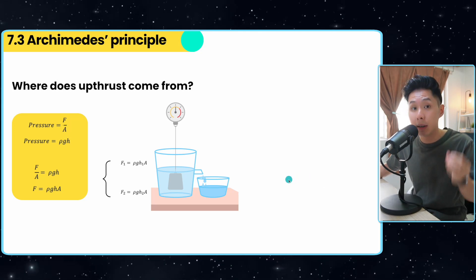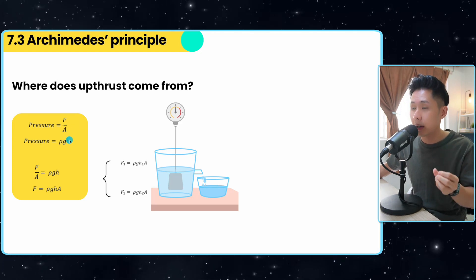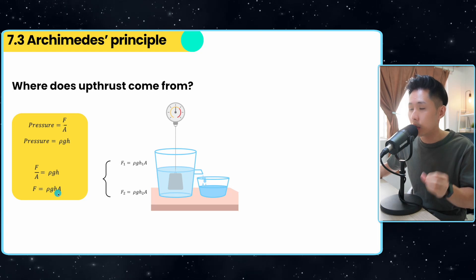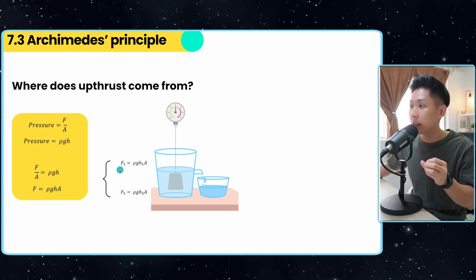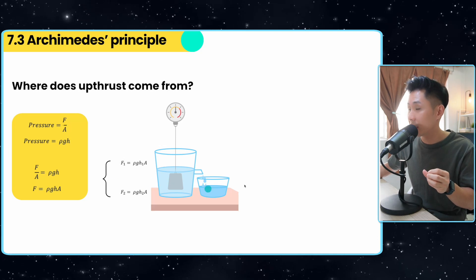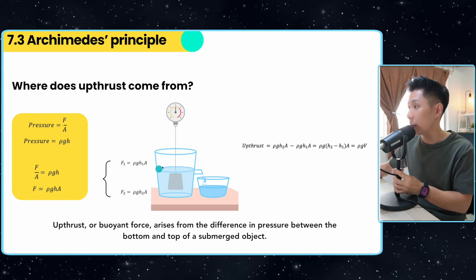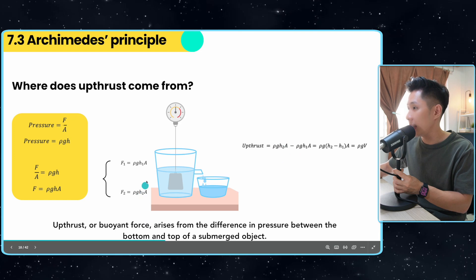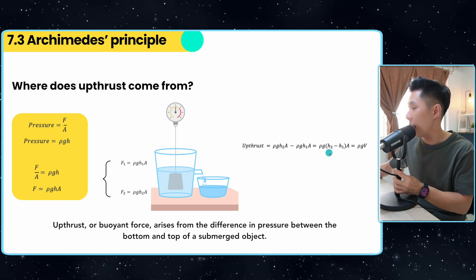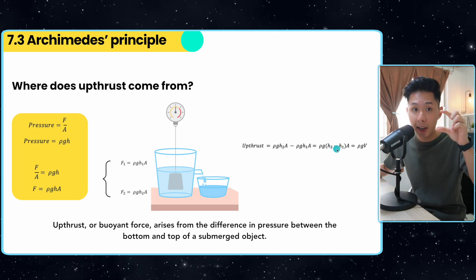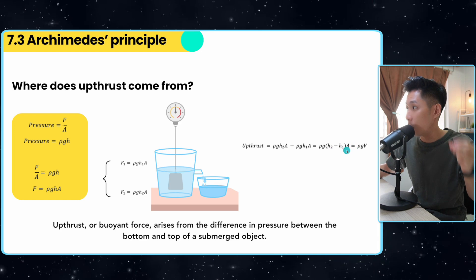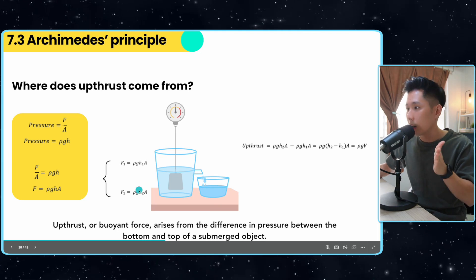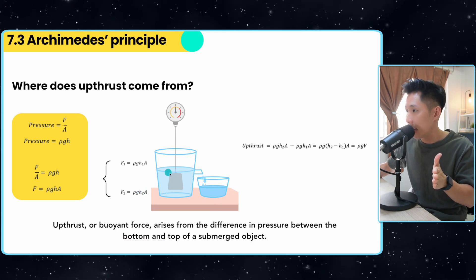So where does upthrust come from? It comes from the difference in pressure. Pressure is F over A and pressure can also be calculated using ρgh. If you put them together, you'll find out that F equals ρghA. Let's say I'm measuring the force at different points of the water cube. By minusing force 2 with force 1, I would have found out the upthrust. So that's how you get it: ρgh₂A minus ρgh₁A. You will have found out that because h₂ minus h₁ is the difference in height, when you have the height and you have area, you got volume. That's why you can also calculate upthrust using ρgV. This upthrust comes from the difference in pressure between this point and also this point.